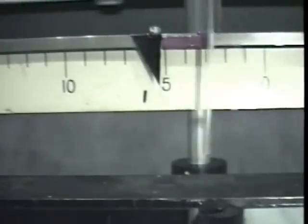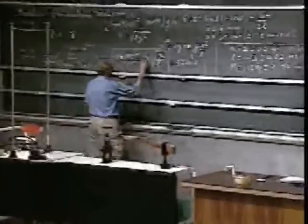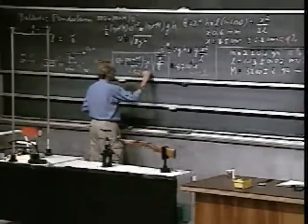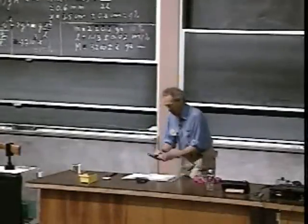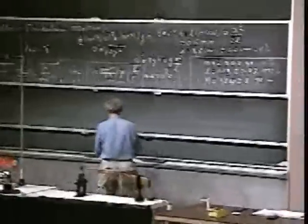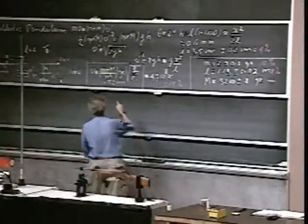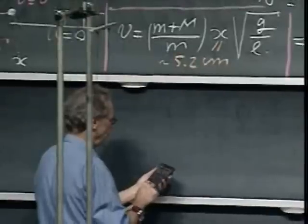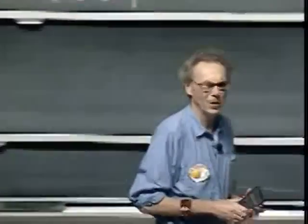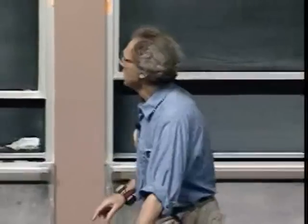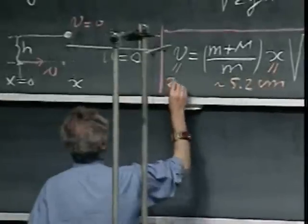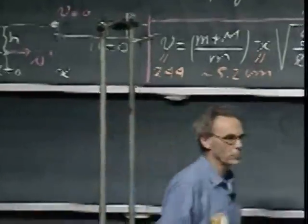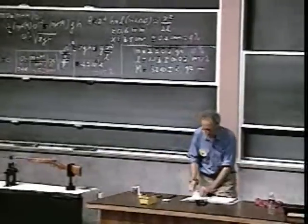I would say 5.2 centimeters seems about right, so x observed is about 5.2 centimeters. With the 15% uncertainty already known, I calculate: 4.7 times 10 to the third times 0.052 meters equals 244 meters per second. I remember last time we got something very similar. So the speed of the bullet is about 244 meters per second — a little under the speed of sound, which is 340 meters per second.